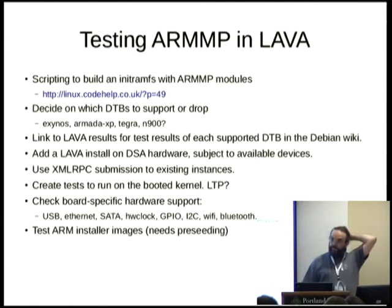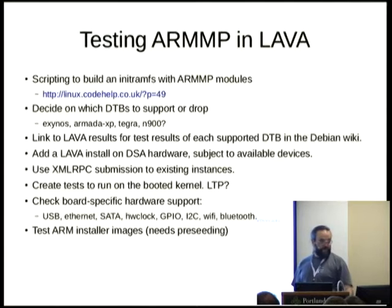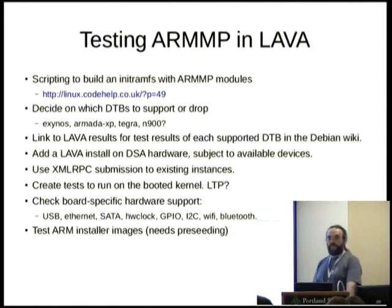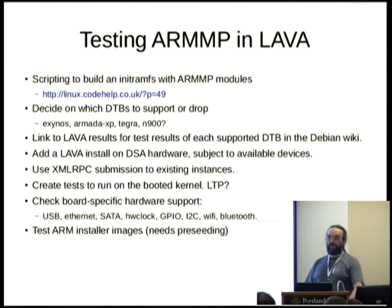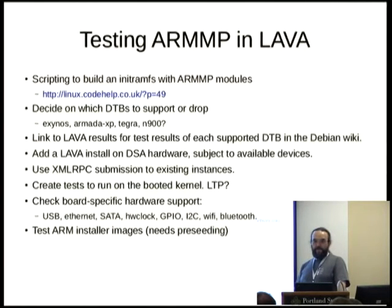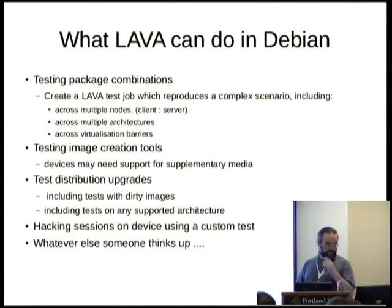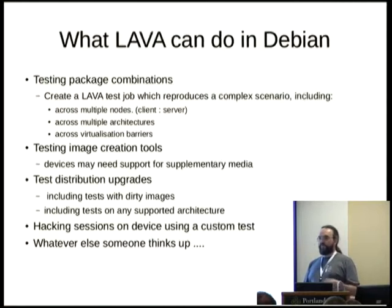We can submit these jobs over XML-RPC to a variety of existing instances and do a variety of other tests on each one, including testing the Debian installer on ARM. There are ways of scripting that and making it work without interaction, so we can test through it. That will generally mean we need to start testing with dual media so that we can have a booted media and a deployment media, and we're looking at boards that support SATA for that.